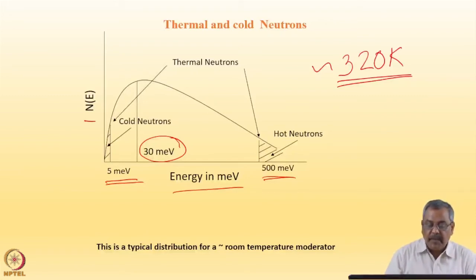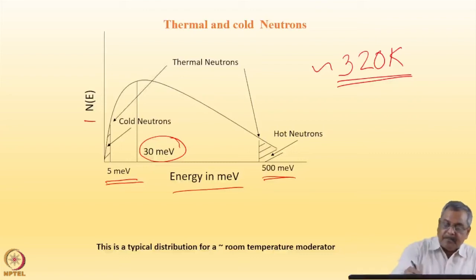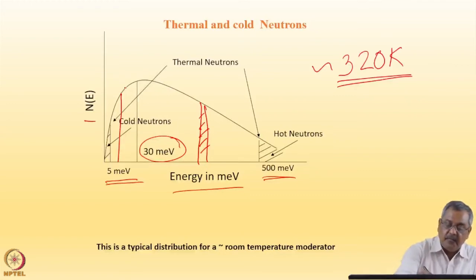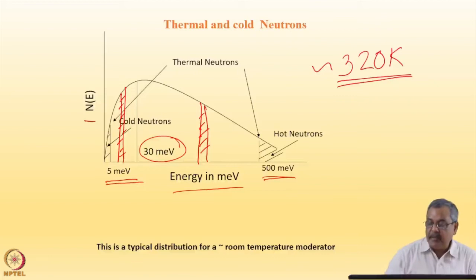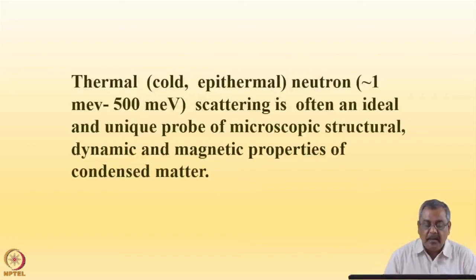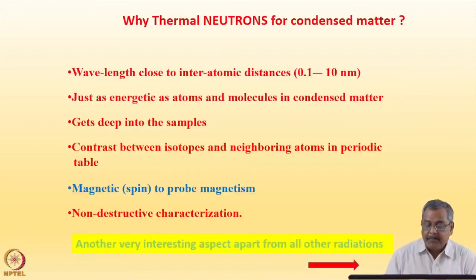We can choose the energy of an incident neutron beam from this Maxwellian spectrum by selecting a particular energy band using something called a monochromator. We can take out a slice of energy from this Maxwellian for experimental purposes. Thermal and epithermal neutrons, typically around 1 milli-electron volt to 500 milli-electron volts, make neutron scattering an ideal and unique probe of microscopic structural dynamics and magnetic properties of condensed matter.